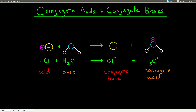So let's look at that same reaction — hydrochloric acid and water. Hydrochloric acid donates the proton to water. After hydrochloric acid donates its proton, what's left, the chloride ion, is the conjugate base of the acid. So they're a pair: the acid and its conjugate base. Likewise, the base and its conjugate acid are a pair. The base here is water — after it accepts the proton, it forms a hydronium ion. The hydronium ion is the conjugate acid of water.